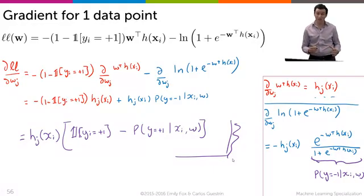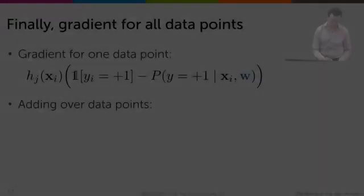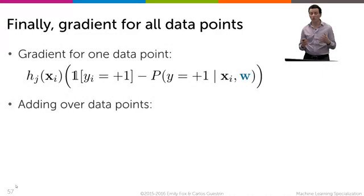So that is really, really cool. Now we're almost done. So for one data point, we have that the derivative, the contribution to the derivative, is h_j times the difference between the indicator and the actual value.